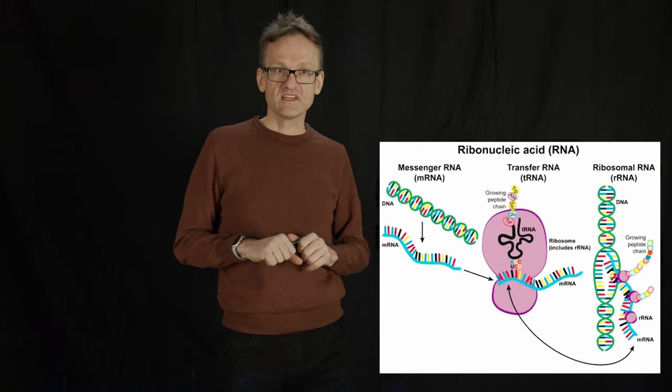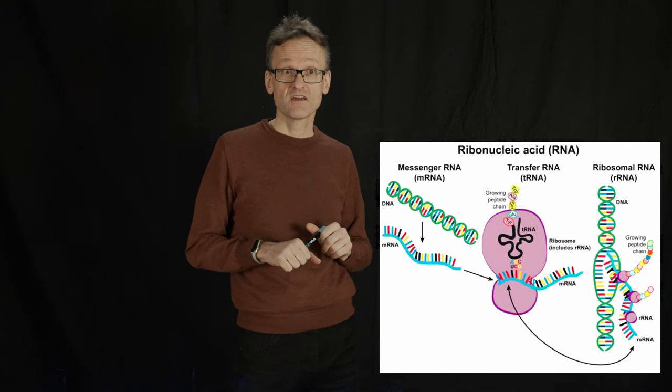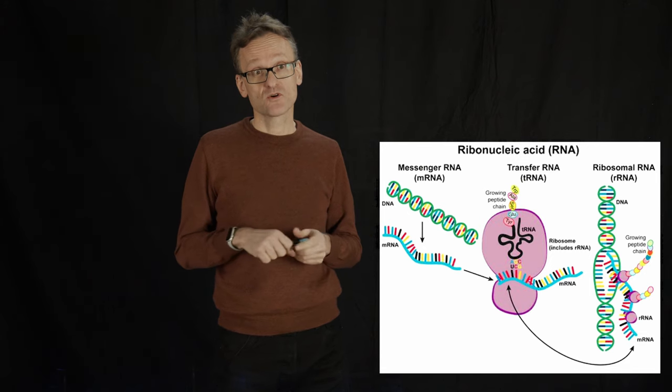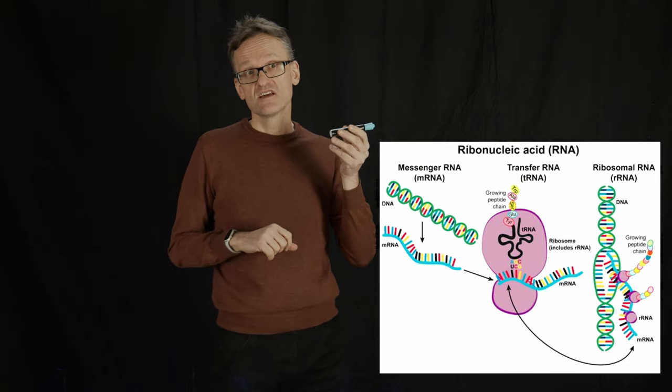The third type of RNA is that once you get this messenger RNA coming with the recipe for the proteins we're going to make, we need the actual protein building blocks. And this so-called transfer RNA are small triplets that,